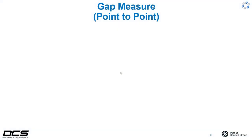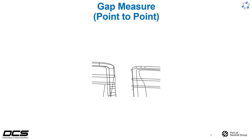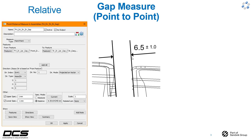We'll get right into the first example which is going to be a point-to-point gap measure. In this case we have a front door and a rear door that has a six and a half millimeter nominal gap and we want to check it to plus or minus one millimeter. First we'll take a look at how to set this measurement up using relative spec mode.